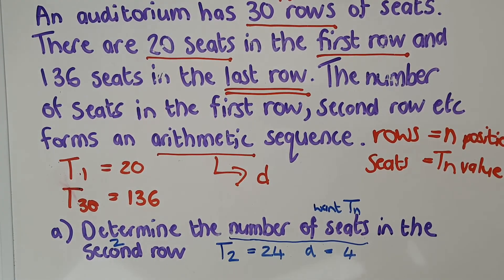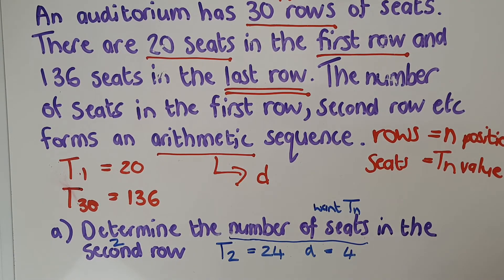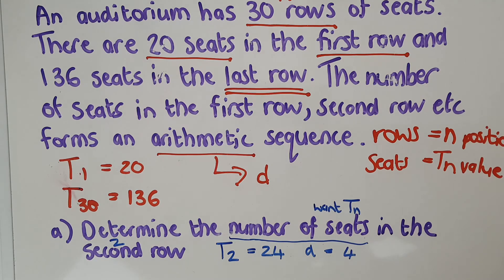Could they have made it harder? Yes — they could have just asked for the total seats directly, and then you would have had to know to first find d using tn, and then use Sn. A lot of questions do require you to do both steps, but you need to sift through it and get practice with these so they don't freak you out, and so you know at least where to start.